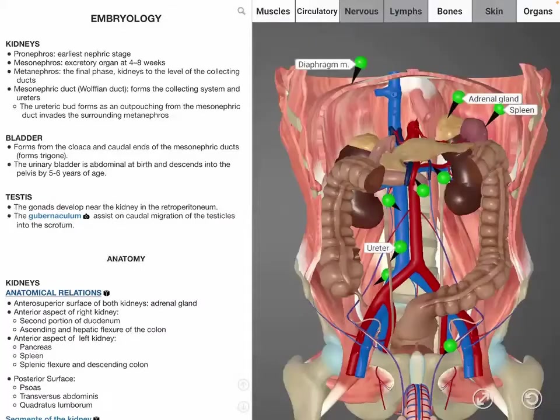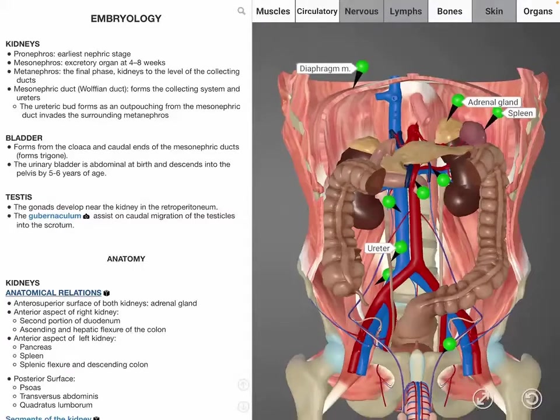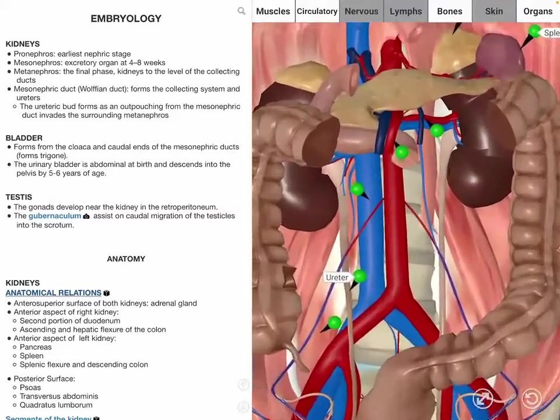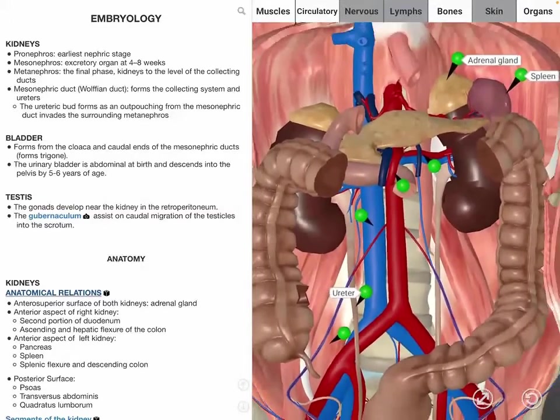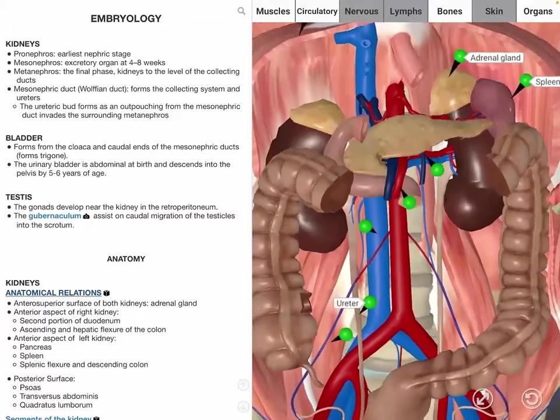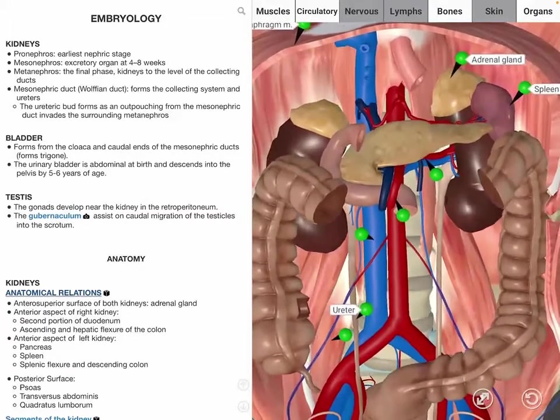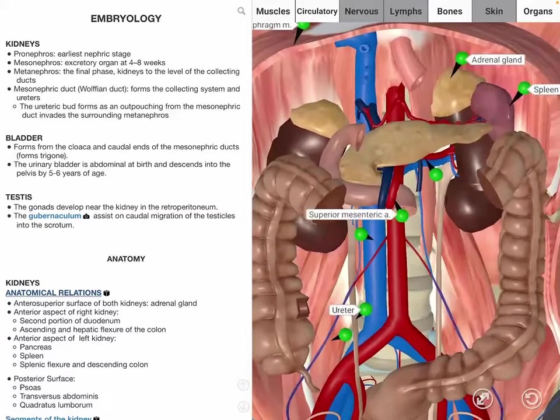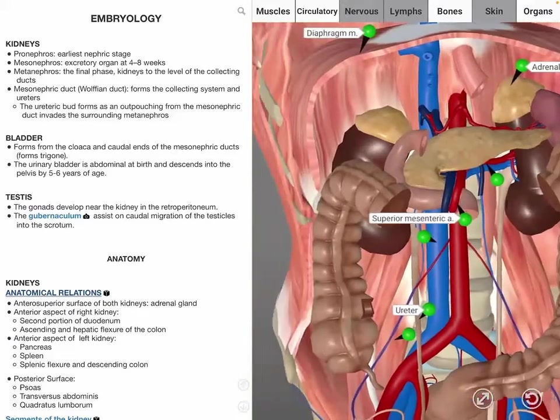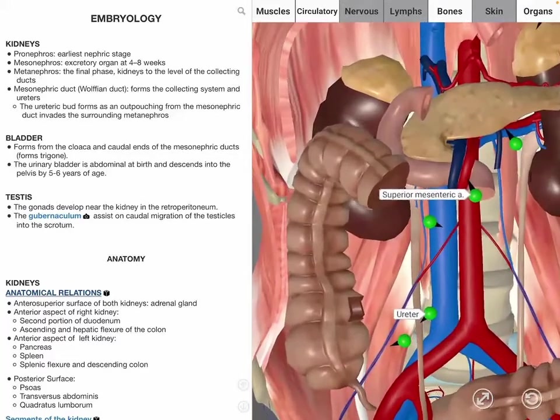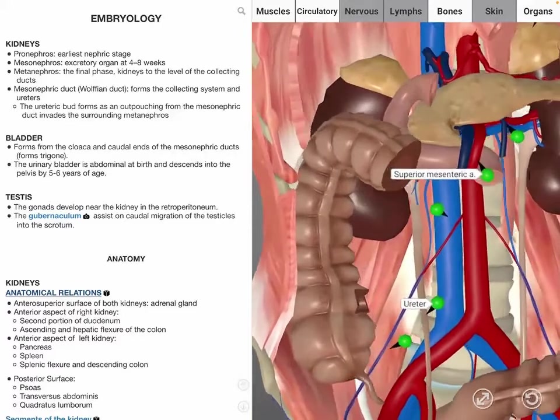Now we switch our focus from embryology to anatomy, beginning with the kidneys. The kidneys are located in the retroperitoneum. As seen in the image, the adrenal glands are located bilaterally on the anterior superior surface of the kidneys. The second portion of the duodenum and the ascending and hepatic flexure of the colon lie anterior to the right kidney.